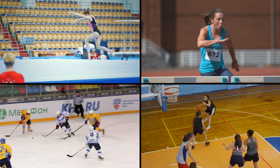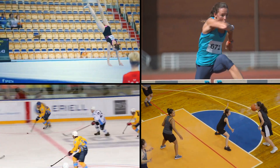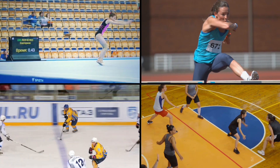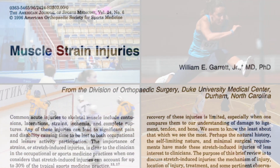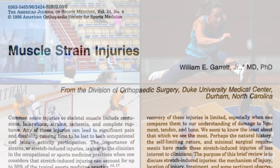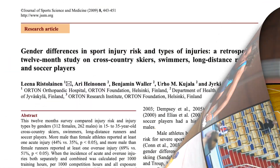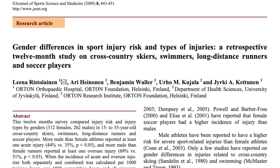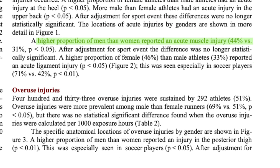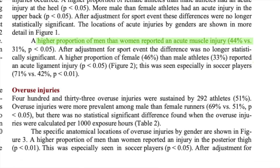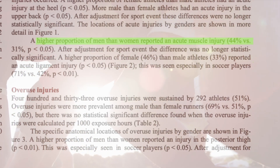The incidence of muscle injuries varies across sports, ages, genders and competition levels. Certain sports like soccer, track and field and gymnastics have a higher prevalence, probably because of their strenuous physical demands. Male athletes tend to have a higher incidence rate of muscle injuries compared to their female counterparts, although the disparity is less pronounced in non-contact sports.